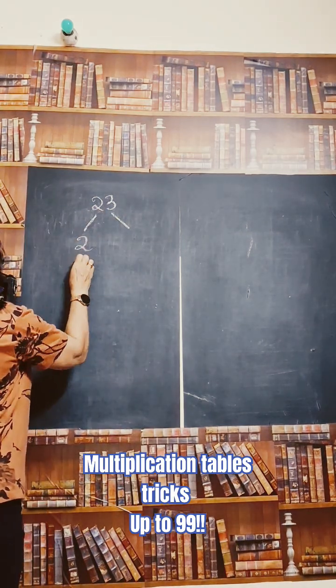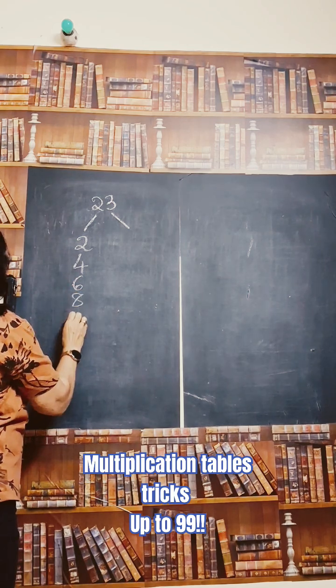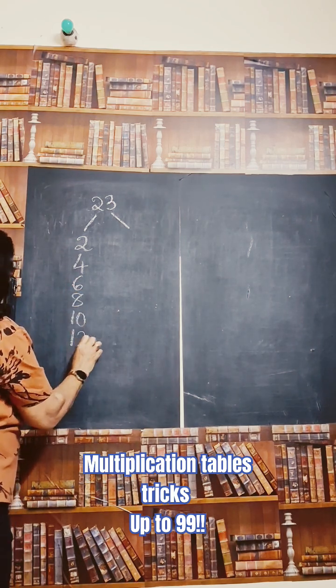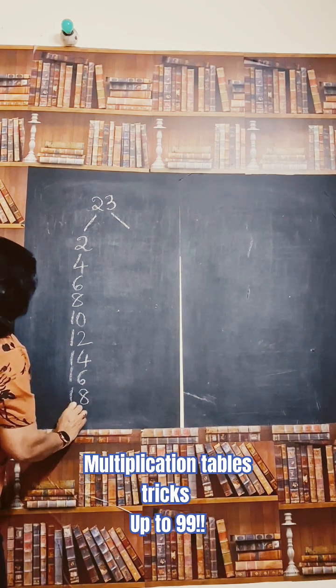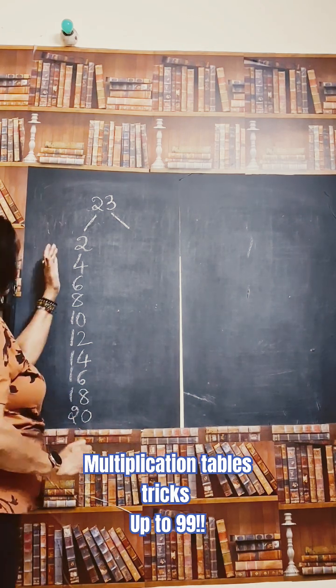2 ones are 2, 4, 6, 8, 10, 12, 14, 16, 18 and 20. So 2 tables over.